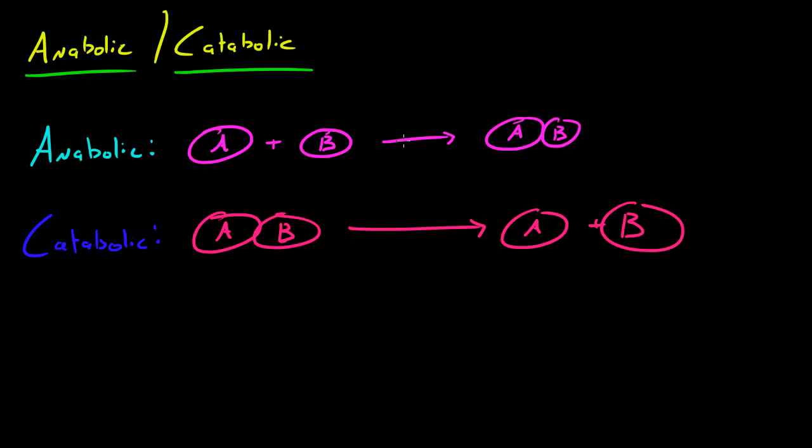A and B in order to bond together they require energy. So in addition to having this arrow, you need additional energy. So whenever you have an anabolic chemical reaction energy is consumed. And why does it need energy? It needs energy so it can bond together these molecules right here.